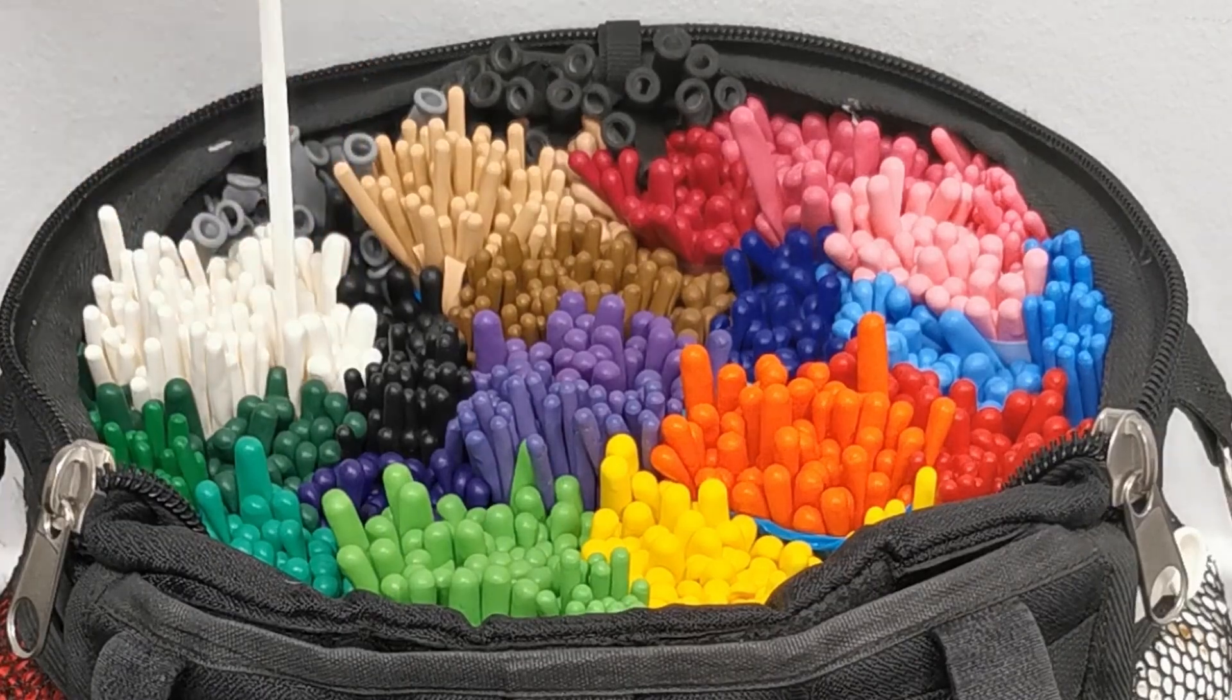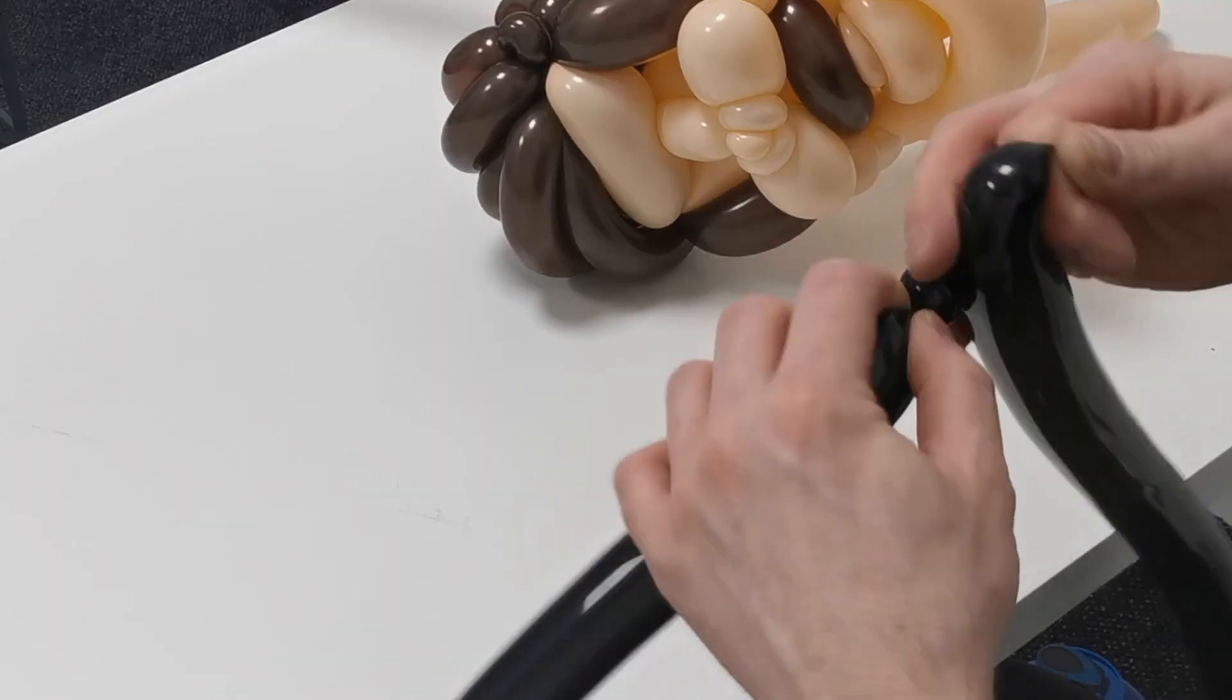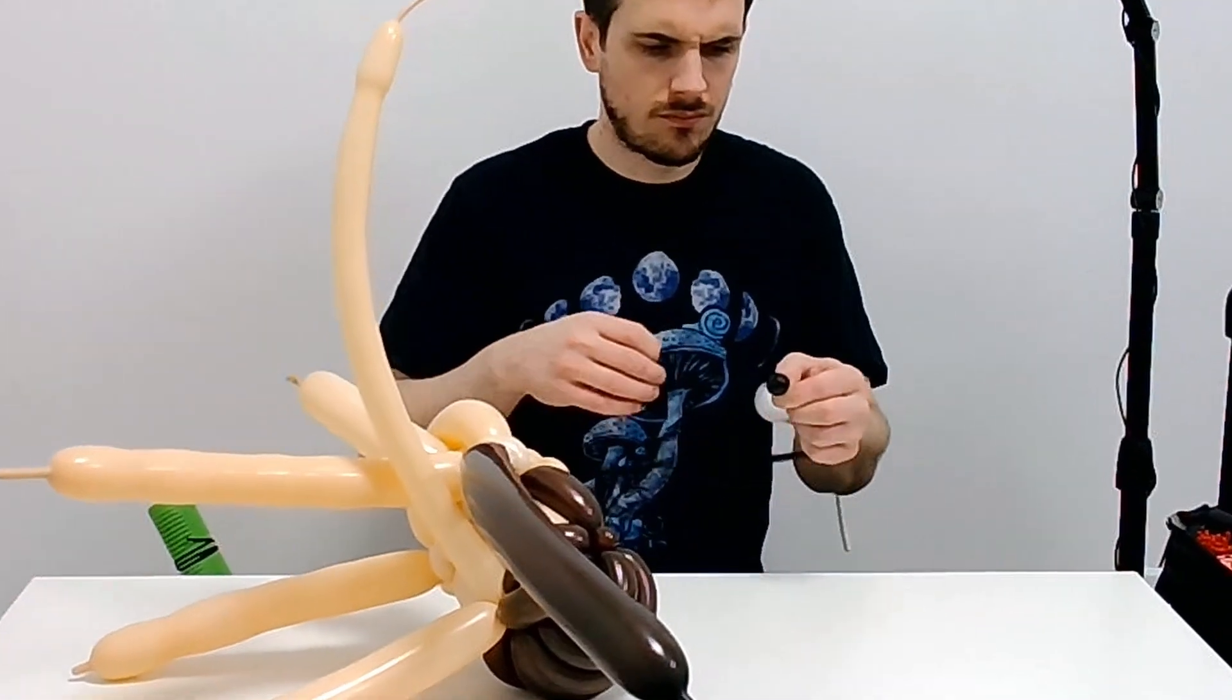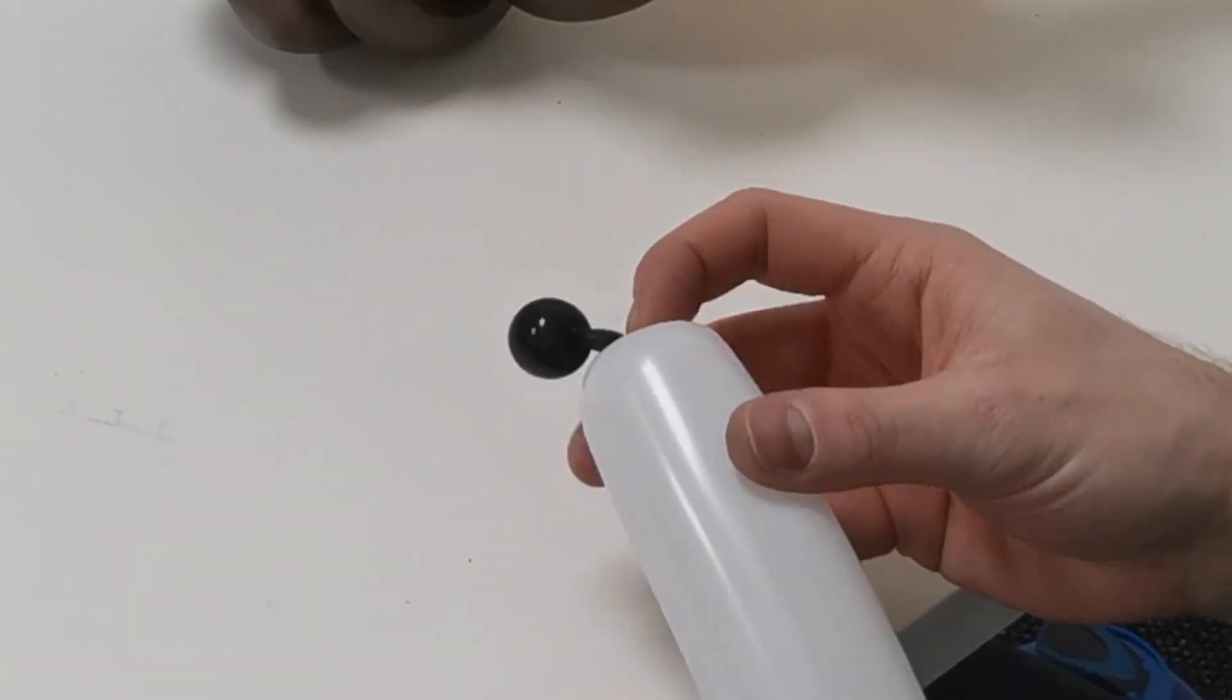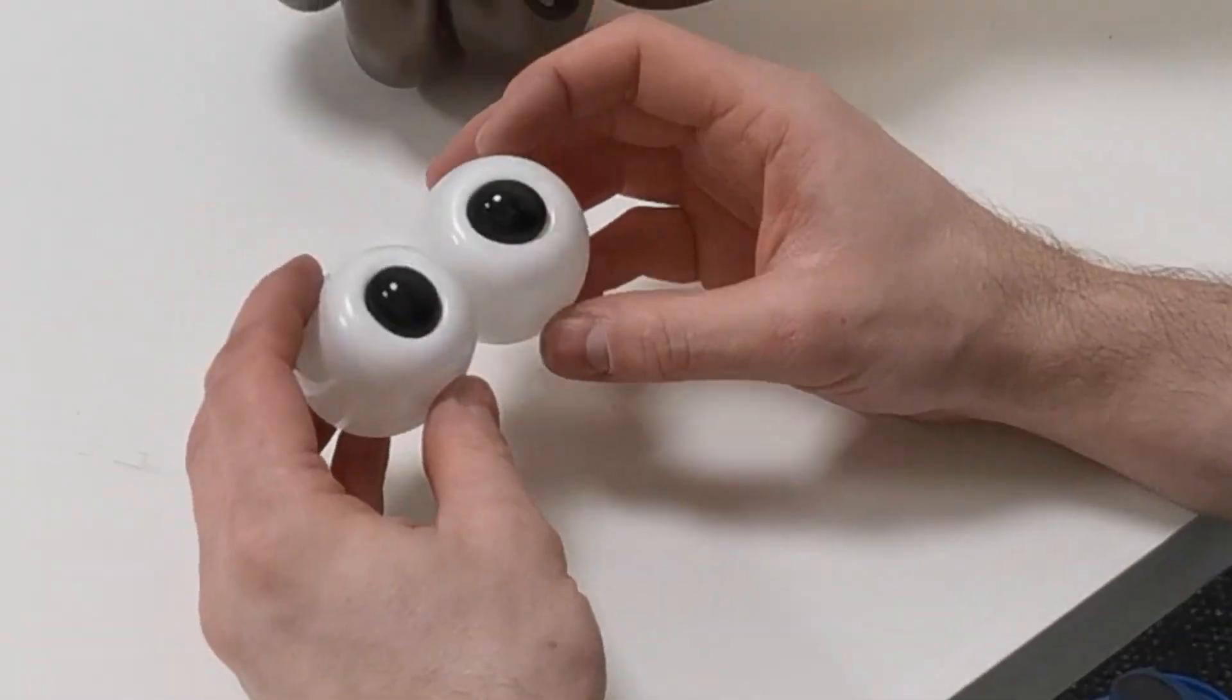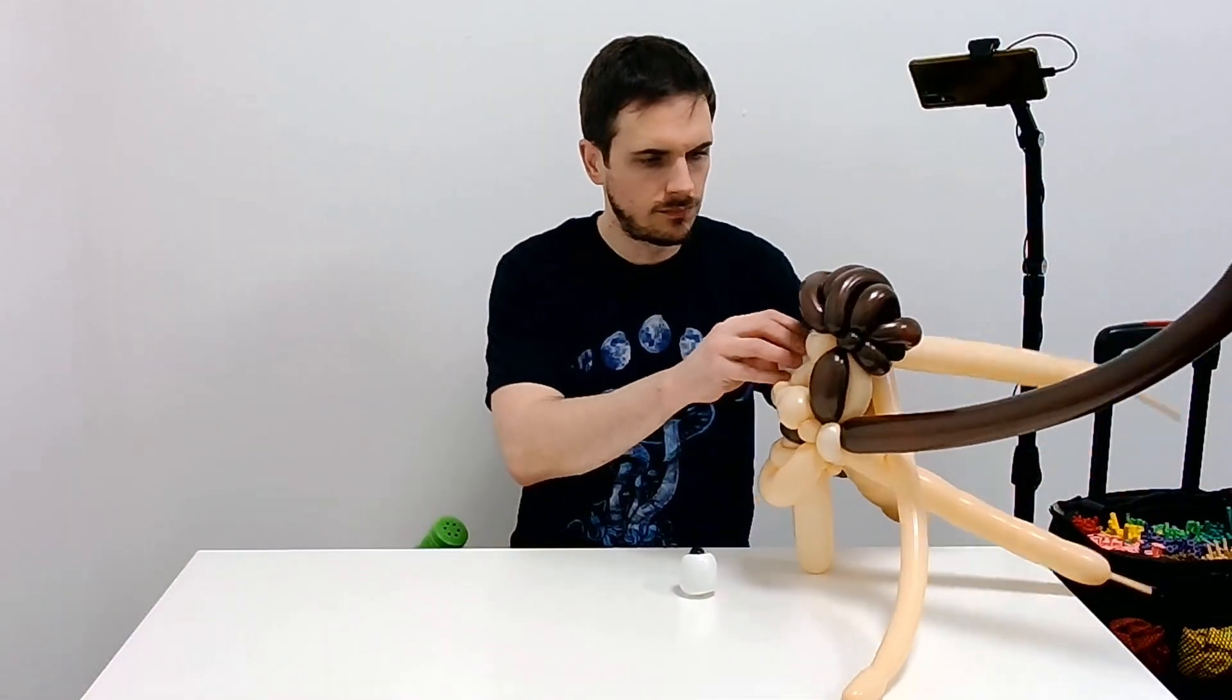And some white for his eyes of course. So we're gonna make two little eyes for Ted Lasso. Just pop them in there. There we are. Two eyes. Easy peasy. Fire them in his face.